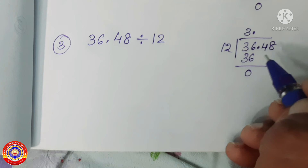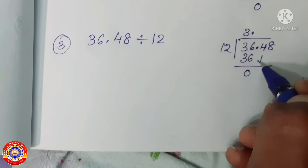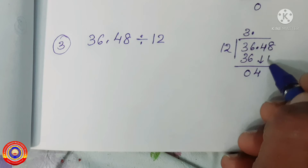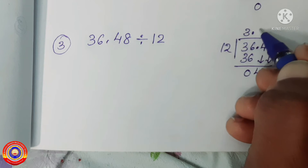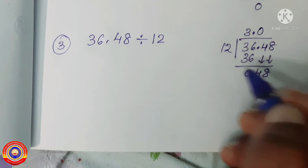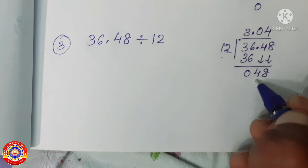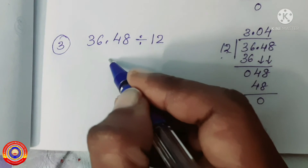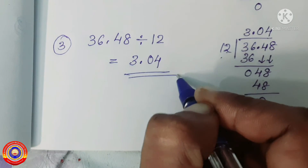Next, we have to take the number in the tenth place. Before that, we have to put a decimal in the quotient. Now take the number in the tenth place — that is 4. We can't divide 4 by 12, so take the next number also. Before that, we have to put a 0 in the hundredth place. Then 4 will become 48, and 48 divided by 12 is equal to 4. 12 into 4 is equal to 48, and 48 minus 48 is equal to 0. Therefore, 36.48 divided by 12 is equal to 3.04.